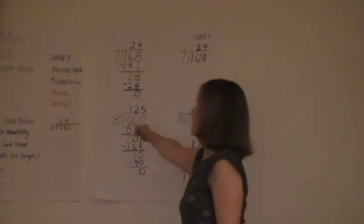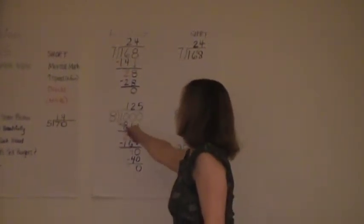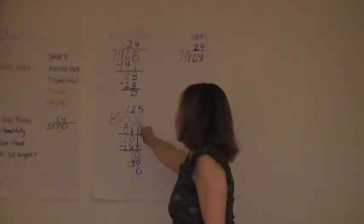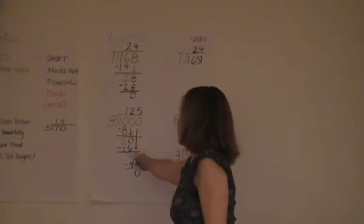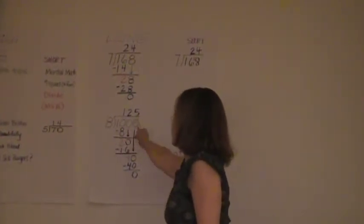The next example is 8 into 1,000 and so here we do 8 into 10 goes in one time. 10 minus 8 is 2. We then bring down this 0 and do 8 into 20 and that goes in twice. And there's the 16, we do 8 times 2 is 16.